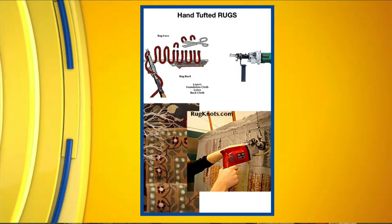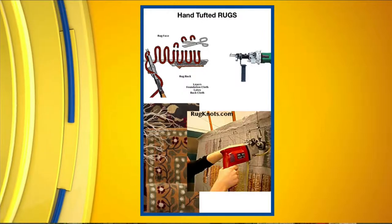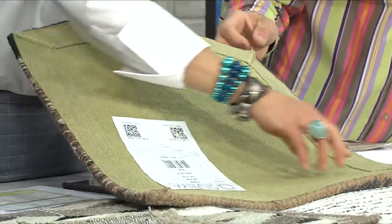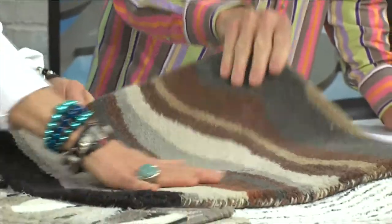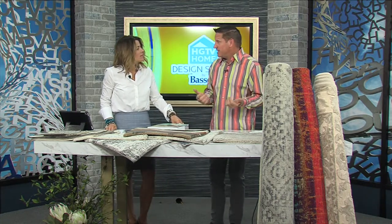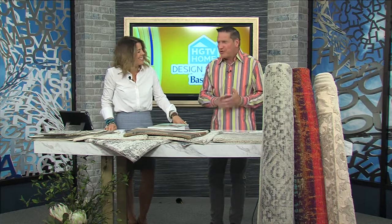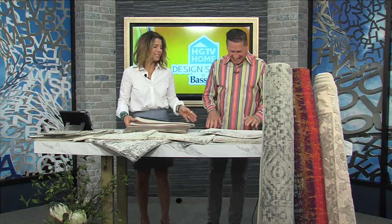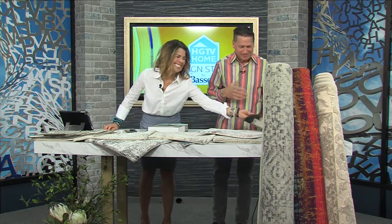Hand-tufted rugs take more time and cost more. Some examples of hand-tufted rugs are shown here — you can see they've been backed and have a lot more work on them. Then beyond hand-tufting, the most expensive rug you can ever get would be one that you design yourself. You can actually send in a painting or a photograph and they can make it into a rug. So you're going from around $400 to a lot more.